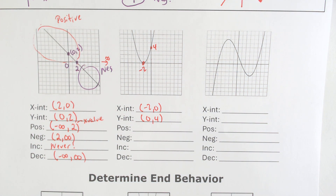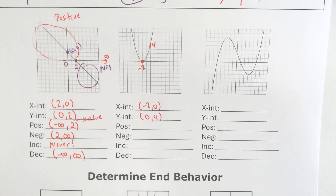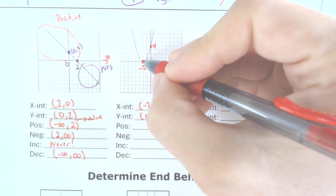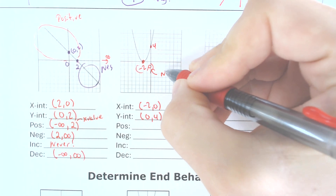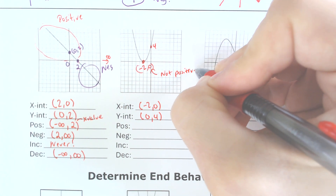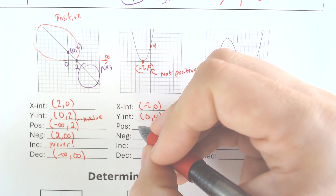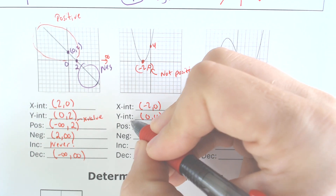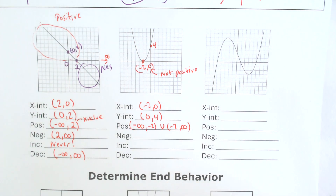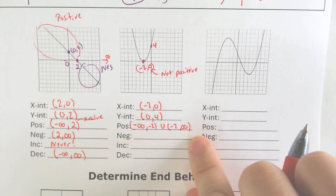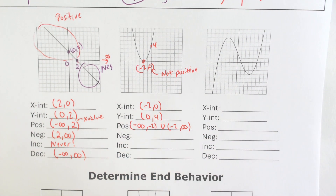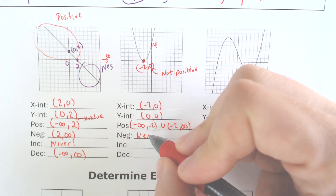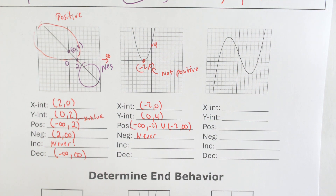When is the graph positive? You could argue the entire existence of this graph, however there is a moment right at (−2, 0) where the value is 0 — and 0 is not positive. So it is positive from negative infinity to negative 2, and then from negative 2 to infinity, using parentheses since 0 is neither positive nor negative. It's never going to be negative, so I won't say it's negative — at that point, it's 0.